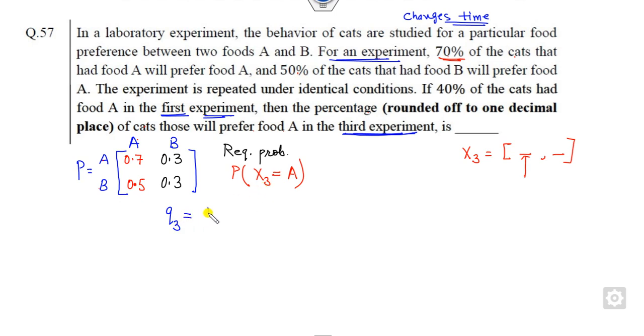We can find the state probability π₀ because the time period is 3. What is π₀? Initial probability of the cat is 40% for food A. It means 0.4 is the initial for A and 0.6 for B.